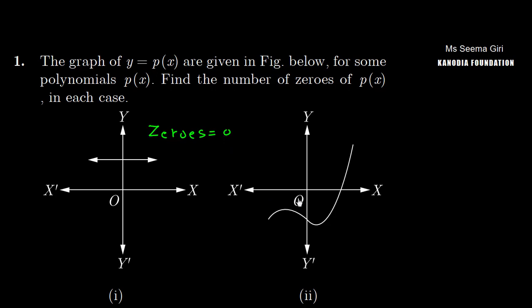Now, if we talk about the second graph, we have one zero, because the x-axis will intersect one time. So we have zeros: one.